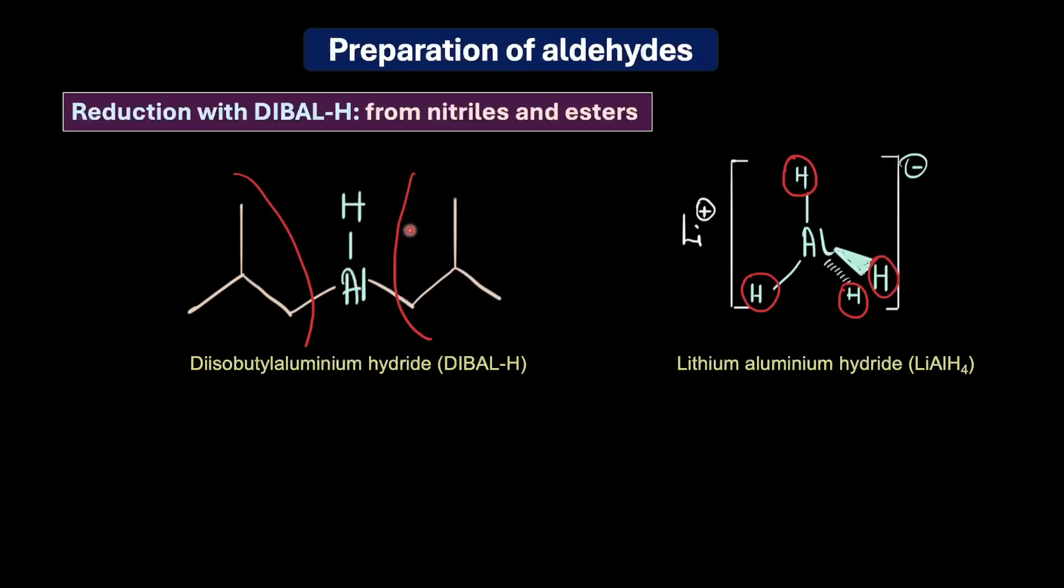If you look at the hydride availability in these two reagents, you can see that each molecule of DIBAL-H has only one Al-H bond, which means it can deliver only one equivalent of hydride ion. Whereas lithium aluminum hydride has four Al-H bonds, which means in theory it can deliver up to four equivalents of hydride ions.